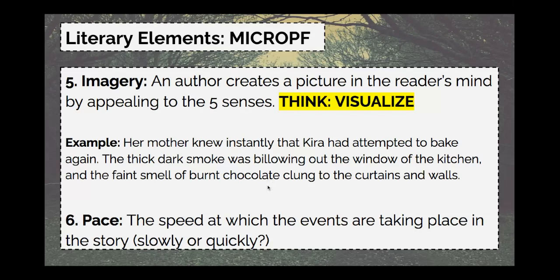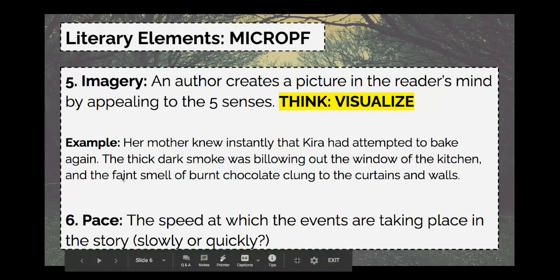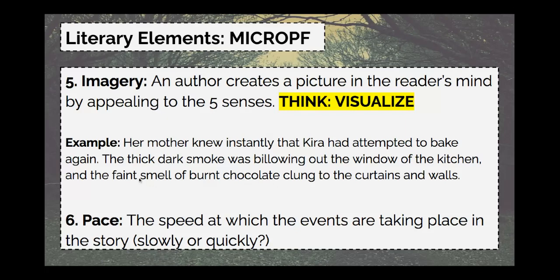Here's an imagery example: 'Her mother knew instantly that Kira had attempted to bake again. The thick, dark smoke was billowing out the window of the kitchen, and the faint smell of burnt chocolate clung to the curtains and walls.' We can see the thick, dark smoke billowing — pouring out of the windows — and we can almost smell the faint burnt chocolate. So we have two senses engaged: sight and smell. Imagery is just like visualize, so this should be a familiar and easy one.